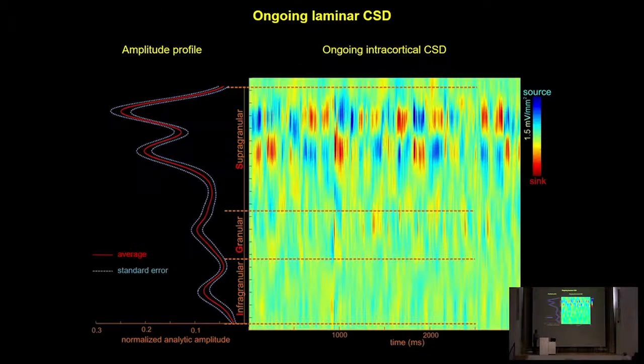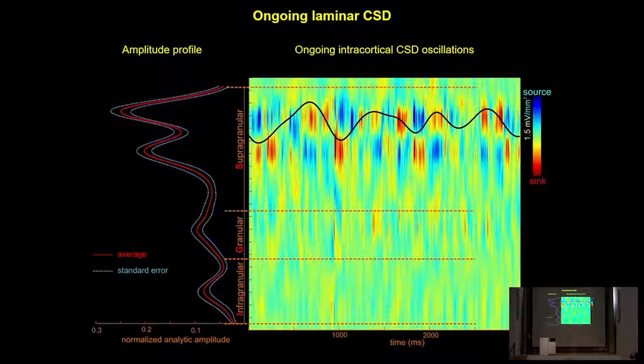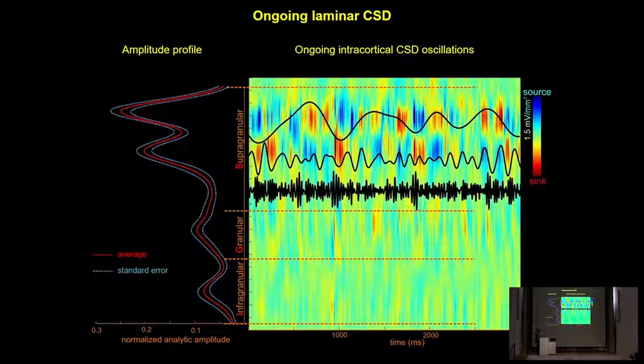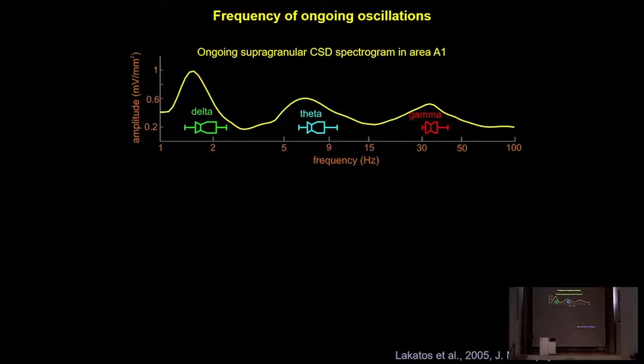In this three-second CSD segment, ongoing neuronal activity is largest in amplitude in the supragranular layers. This is not a simple sinusoidal oscillation, but if you overlay the delta band filtered waveform you can see rhythmic recurrences of stronger sink-source pairs in the supragranular layers with higher frequency oscillations superimposed. The typical spectrogram of the supragranular layers shows a delta, a theta, and a gamma frequency peak.